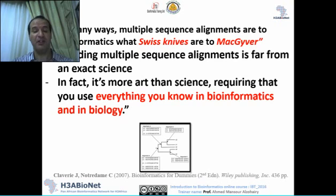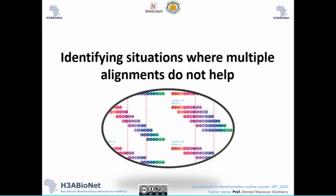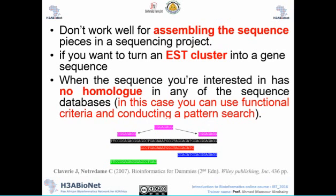Building multiple sequence alignment is for biologists — you have to use all your knowledge in bioinformatics and biology. It's like a Swiss knife: you can do many things with it and extract a lot of information. You have to know what you're looking for. Sometimes MSA doesn't help, for example when assembling sequences, building an EST cluster, or when you have no homologs for your genes.